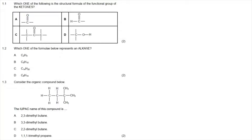Question 1.1 asks which is the structural formula of the functional group of ketones. The functional group for a ketone is the carbonyl group — the carbon-oxygen double bond. The difference between a ketone and an aldehyde is that in a ketone the carbonyl group is in the middle of the carbon chain, with carbons on either side. The correct answer is option C, which clearly shows the chain extending in both directions from the carbonyl bond, unlike option A which implies an aldehyde.